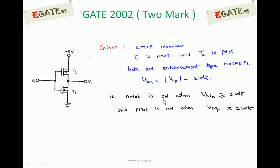NMOS conducts when VGS is greater than or equal to 2 volts. PMOS conducts when VSG is greater than or equal to 2 volts, or equivalently, the modulus of VGSP should be greater than or equal to 2 volts.